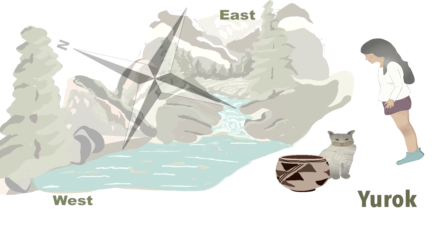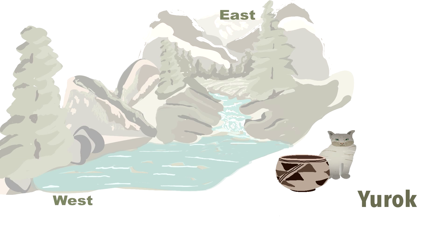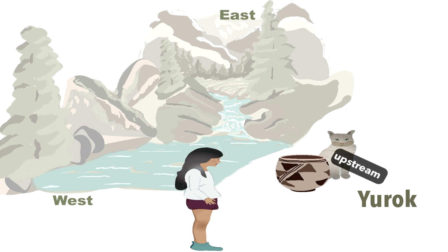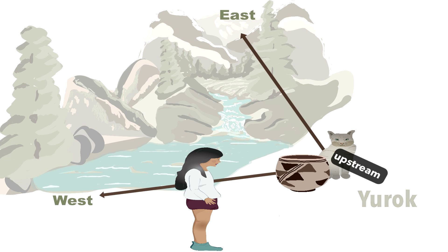Now consider what a speaker of Yurok in the shoes of this girl would say when she is in another place in the scenario and is asked where is the cat. Just as in the previous scenario, they would say the cat is upstream from the clay pot. This is because the locations of the cat and the clay pot have not changed, and it does not matter where the speaker is located. Since the cat is still further east of the clay pot, it can only be said to be upstream from it.